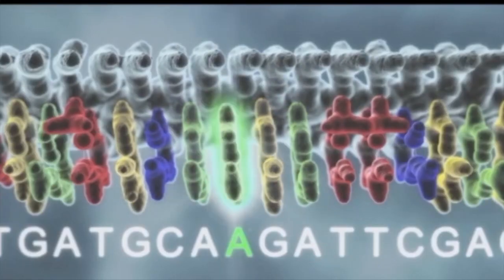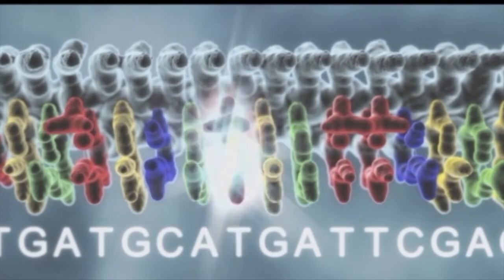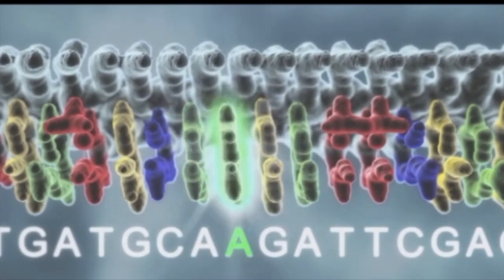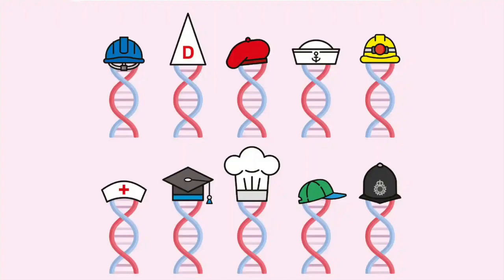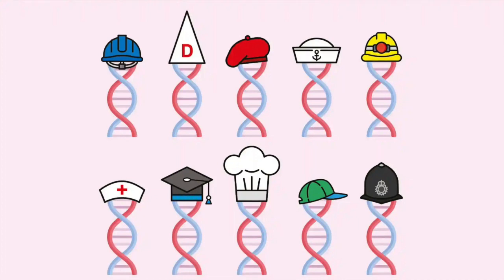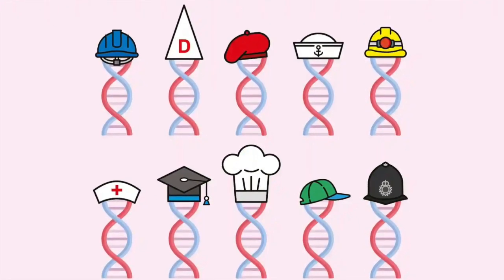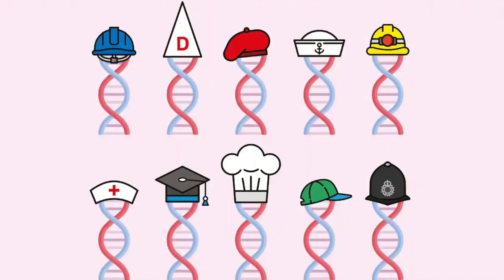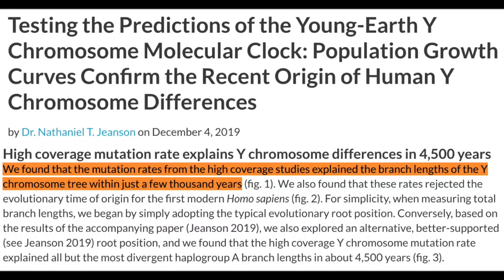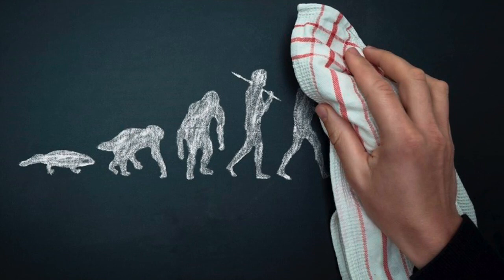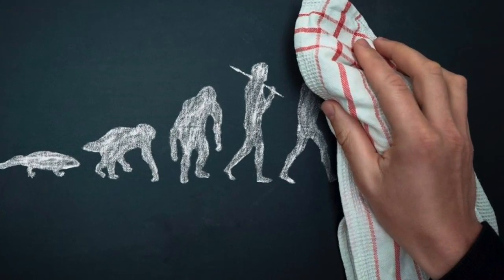Since we now know the Y-chromosome mutates fast, a lot faster than the evolutionary community has ever predicted, there ends up being on average three mutations per generation. And there ends up only being a few hundred mutations separating people worldwide. Then our last Y-chromosomal ancestor, Noah, existed just 4,500 years ago. This is all inconsistent with human evolution and common ancestry.